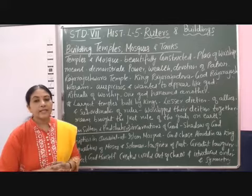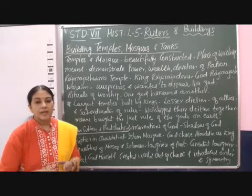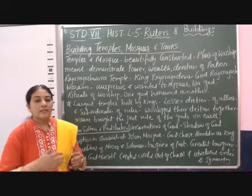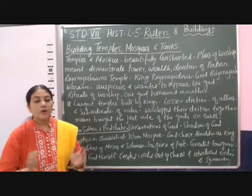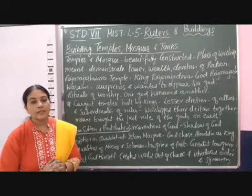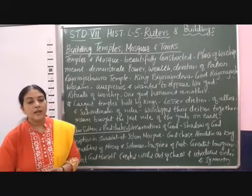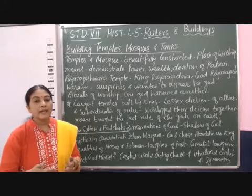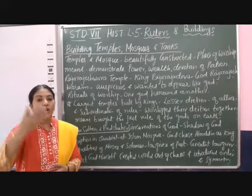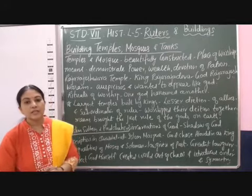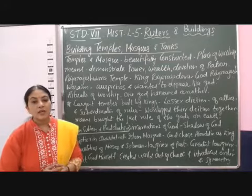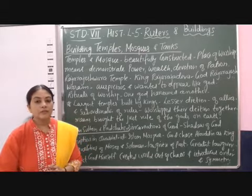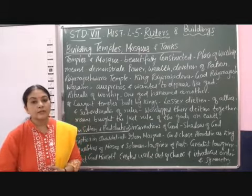Those smaller deity temples would be built by the allies or subordinates of the king. When worship was held, the king and all his subordinates together worshipped the God. This showed that all of them were together trying to bring the just rule of God to the earth — to bring justice and good rule on the earth. They wanted to prove their devotion and dedication to the Gods.